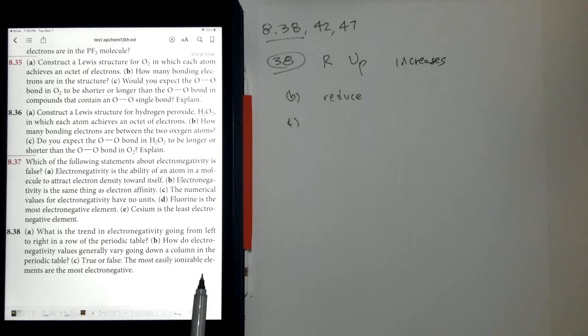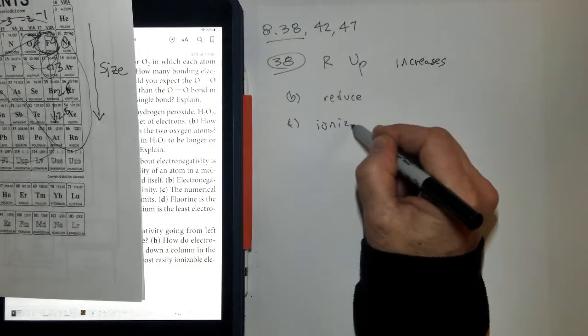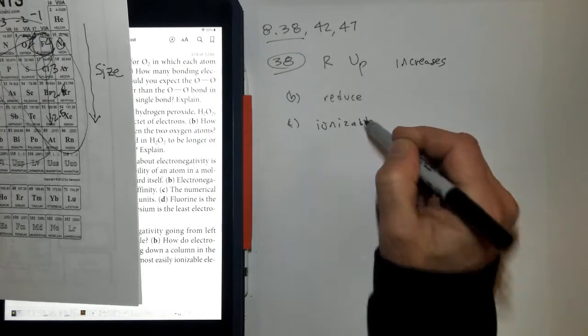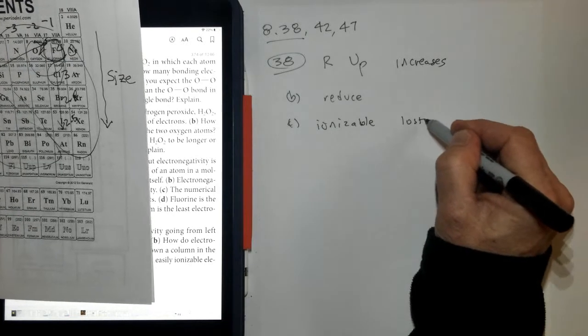True or false: The most easily ionizable elements are the most electronegative. The most electronegative are these guys up here, and you need to know what ionizable means. Ionizable means that it can lose an electron.